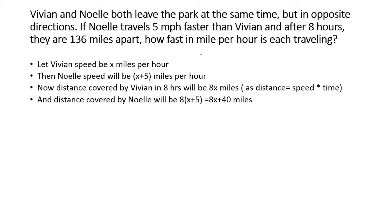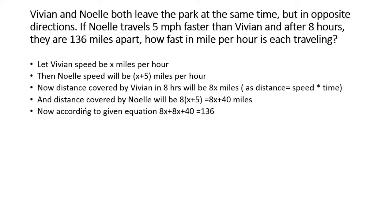According to the problem, after eight hours they are 136 miles apart, so the total distance covered by both Vivian and Noel is 136. We add Vivian's distance and Noel's distance: 8x plus 8x plus 40 equals 136 miles.